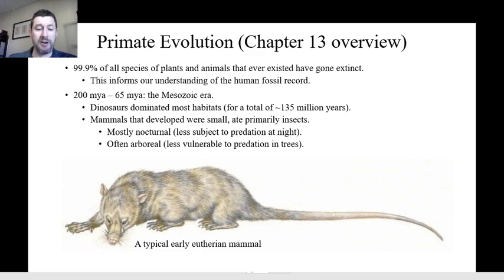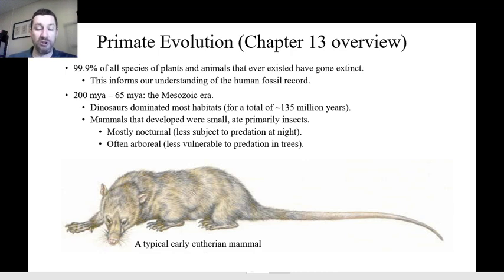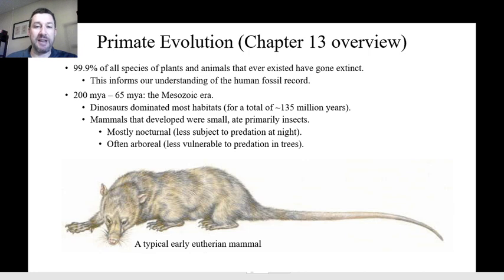At the bottom here we have a typical reconstruction of what one of the earliest mammals — the eutherians — might have looked like. For the most part they resembled some kind of rat, shrew, squirrel, or weasel-looking animal: long, small, furry, and insect-eating adapted.